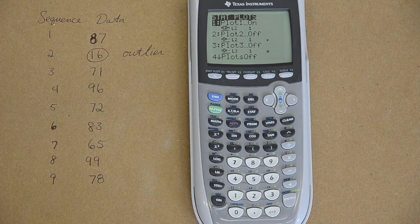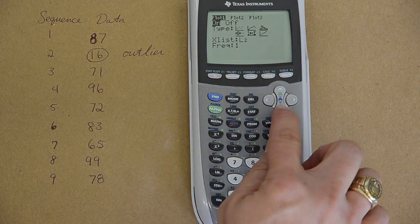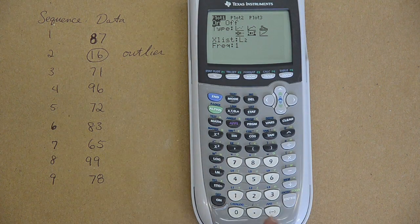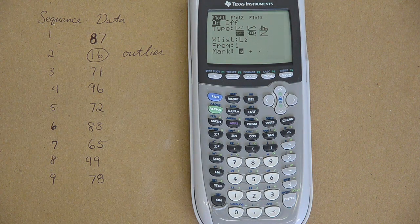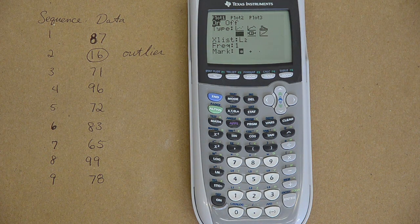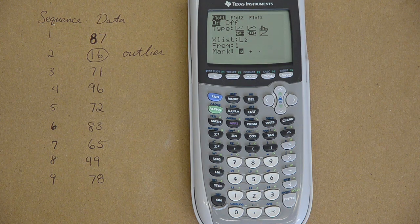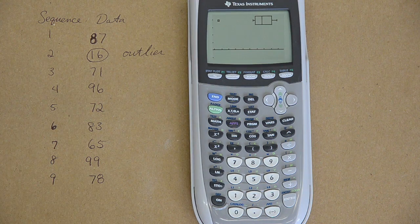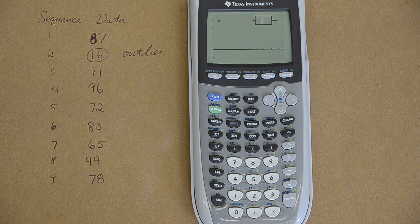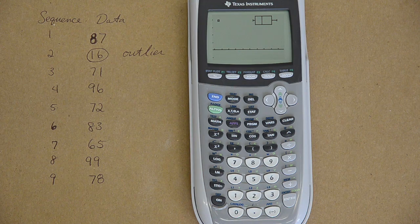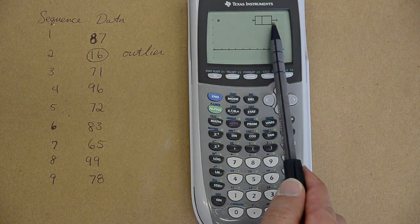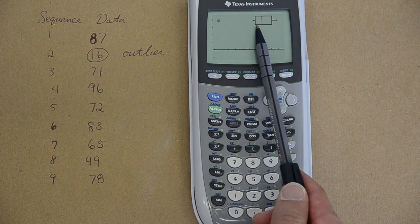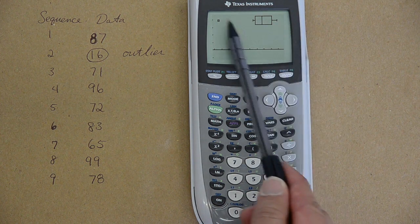Let's double check that with something called a modified box plot. Second stat plot, one. Now I am going to go down with my right arrow, the modified box plot. That has just got a couple of dots in it. We will be going over modified box plots in the next video. Hit enter, zoom 9. Now that modified box plot, what it has done is something called an IQR test for you automatically. That is where you take Q3 minus Q1, find a value, multiply it by 1.5 and you add it to Q3 and you subtract it from Q1 to make this interval to help identify outliers.